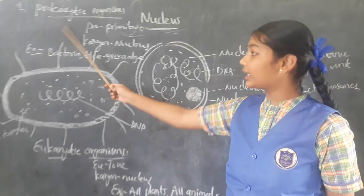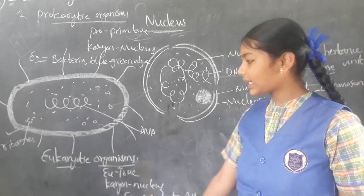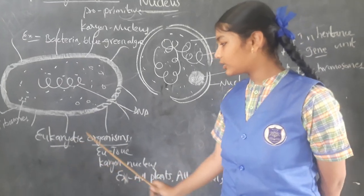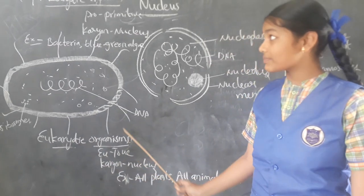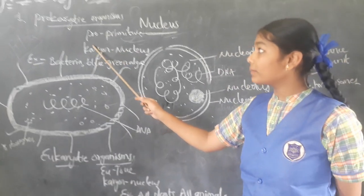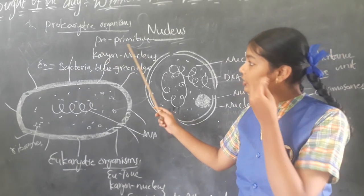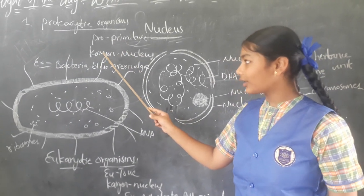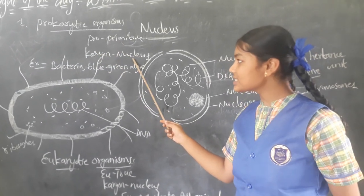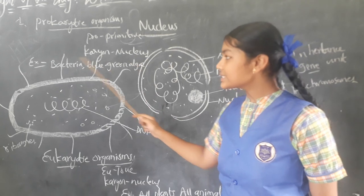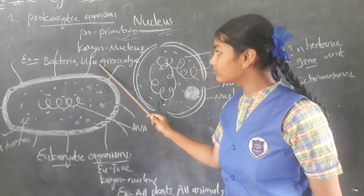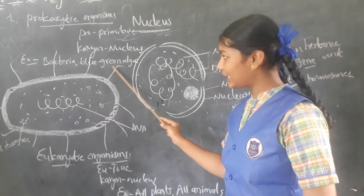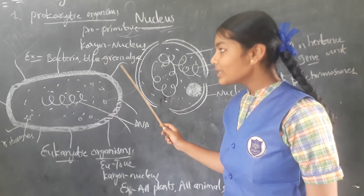The first one is prokaryotic organisms. The second one is eukaryotic organisms. 'Pro' means free. 'Karyon' means nuclear. An example of prokaryotic organisms is bacteria.